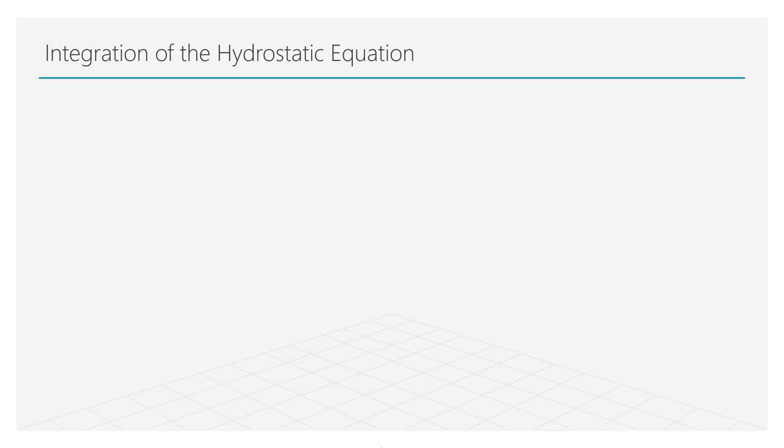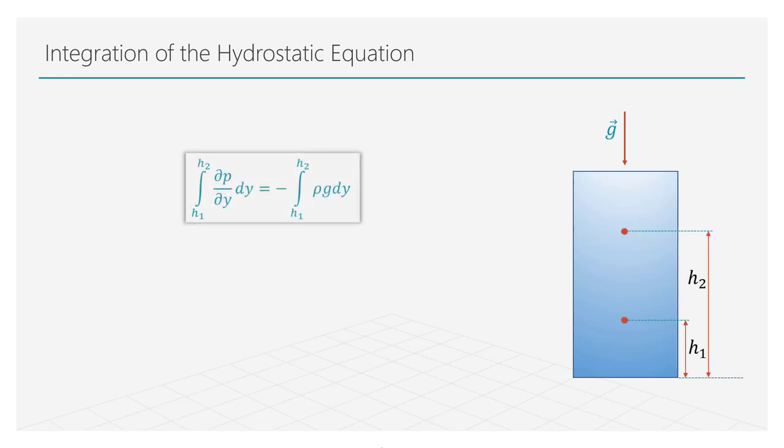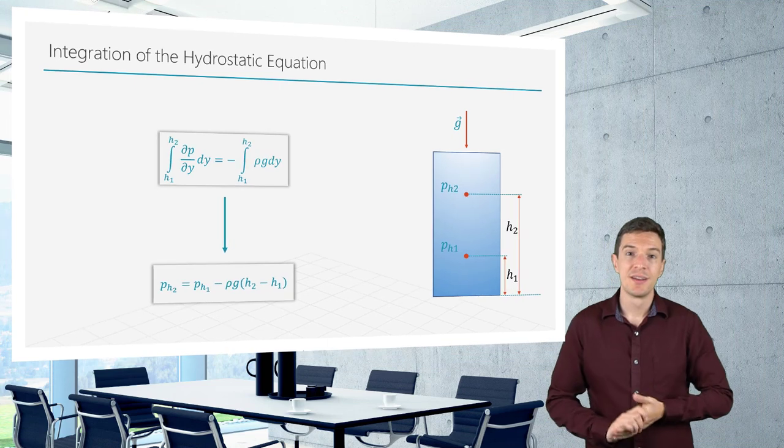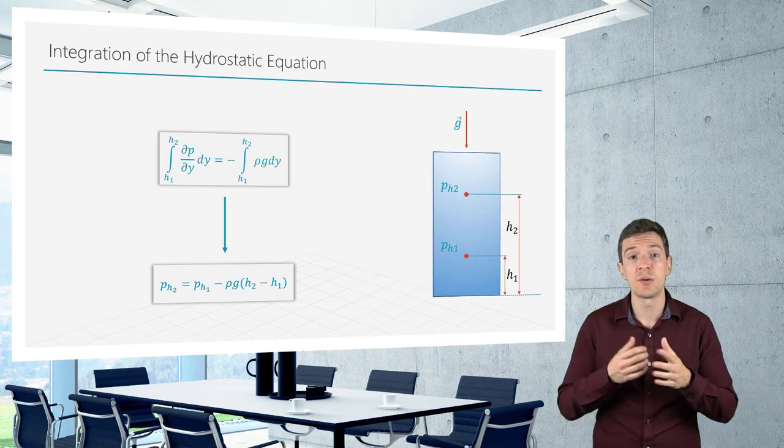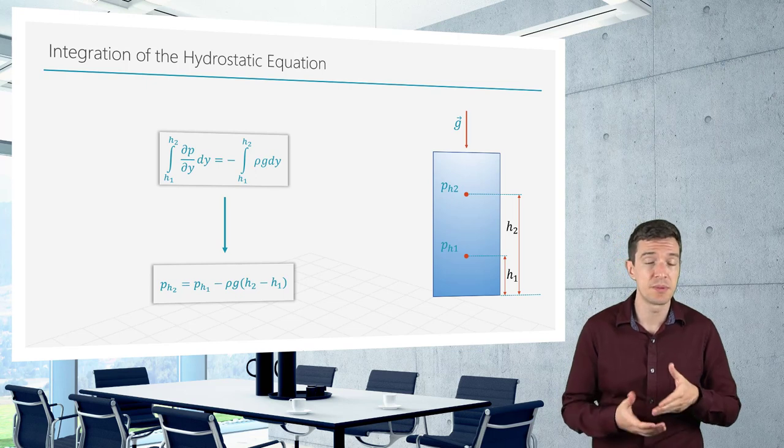Let's now see how we can use the hydrostatic equation we just derived. Let's assume that we have a column of water under a gravitational field and we want to estimate the pressure at two different locations. Integrating the hydrostatic equation between these two points along the vertical direction, we get this final relation. This actually tells us that the pressure varies linearly if the fluid density stays constant. The deeper we go into water, the higher the pressure is going to be. This is the reason why we need to compensate the pressure as we dive deep down in water.